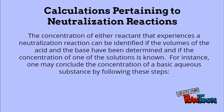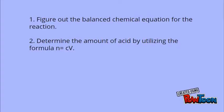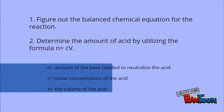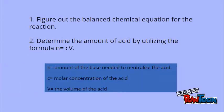For instance, one may conclude the concentration of a basic aqueous substance by following these steps. First, figure out the balanced chemical equation for the reaction. Then, determine the amount of acid by utilizing the formula n = cV, where n is the amount of the base needed to neutralize the acid, c is the molar concentration of the acid, and V is the volume of the acid.